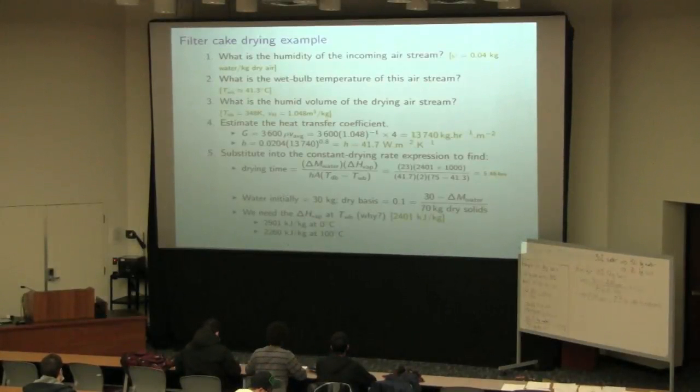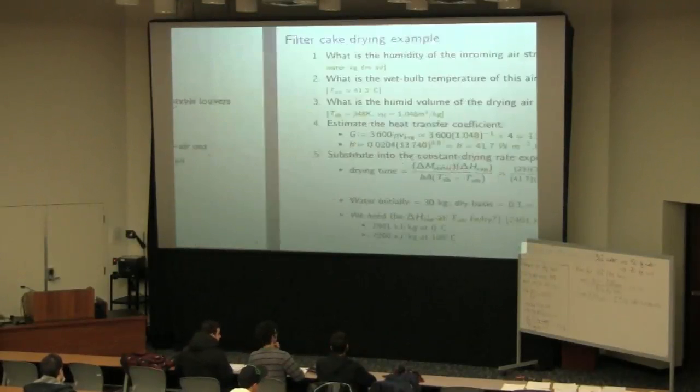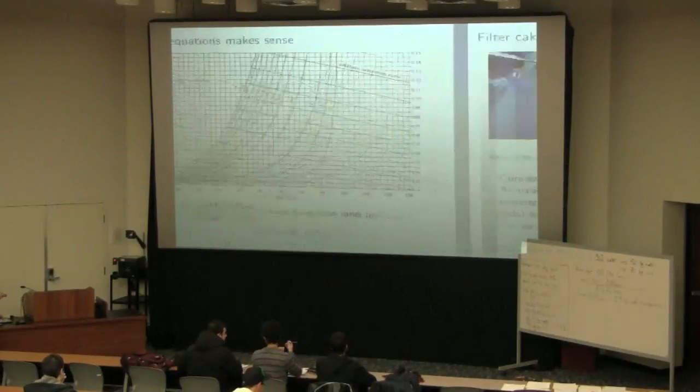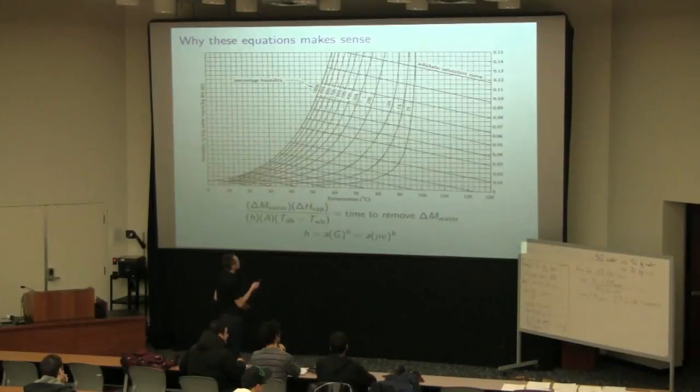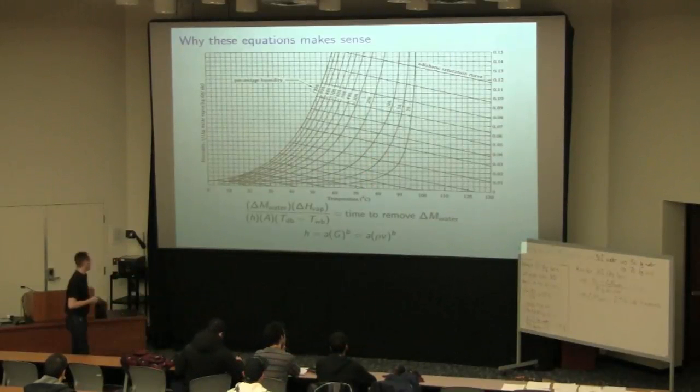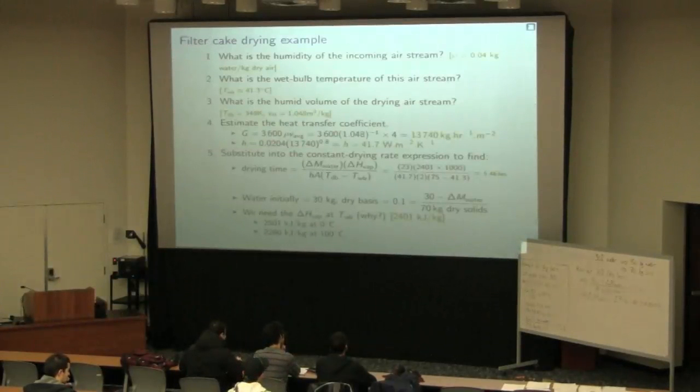Let's break this question down into subsections. The first quick part is to estimate the humidity of that incoming air stream. So 0.04 kilograms of water per kilogram dry air is what I obtain when I look at my psychrometric chart at 75 degrees C, 10% humidity. We've got our incoming moisture there, 75, come up to 10% moisture, read across, and 0.04 kilograms of water per kilogram dry air. So that's my incoming air stream's humidity.